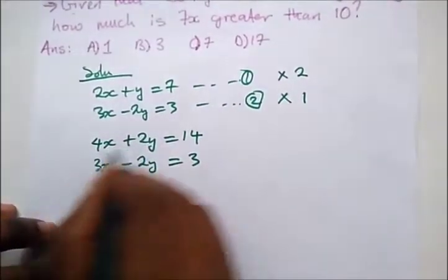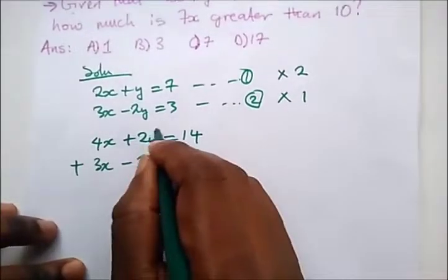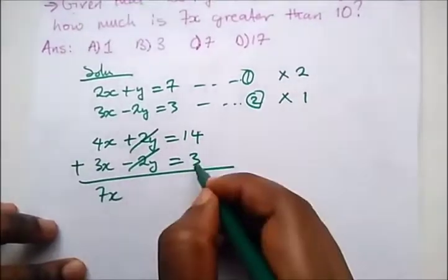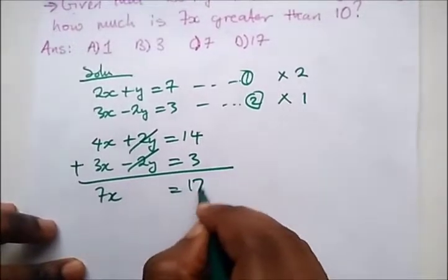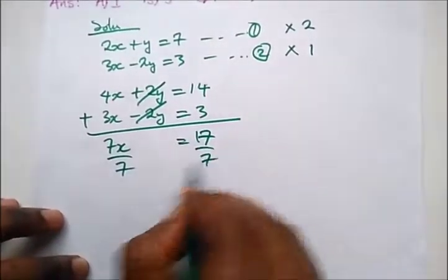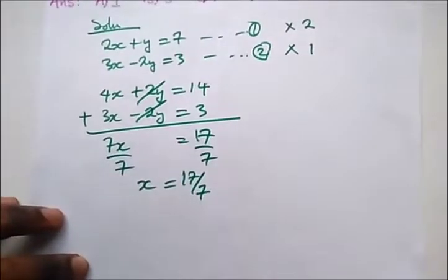So from here we can cancel this plus 2 and minus 2 by just adding. So this will cancel. So what do we have here? We have 7x, 14 plus 3, that's 17. So from here divide both sides by 7, x is equal to 17 over 7.